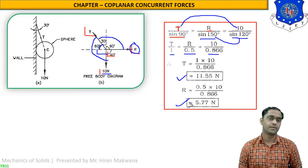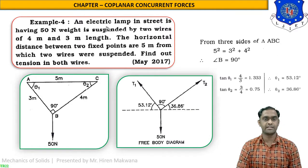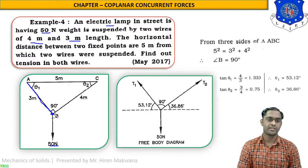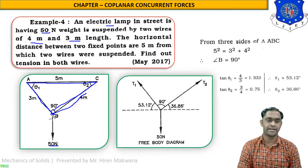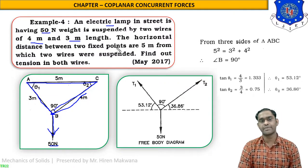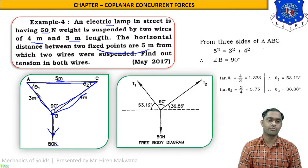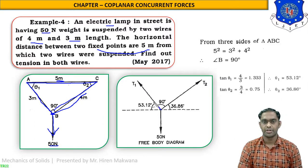Let us see one more numerical to understand the theorem. In example number four, an electric lamp in the street has a weight of 50 Newton. It is suspended from point B by two wires of 3 meter and 4 meter length from a ceiling AC. The distance between the two fixed points on the ceiling is 5 meter. We have to find the tension in both wires, T1 and T2.